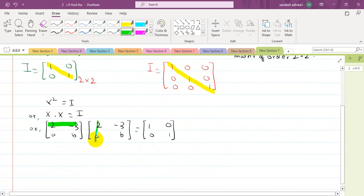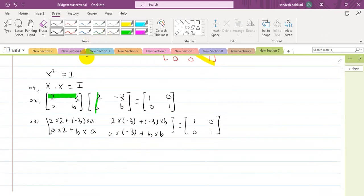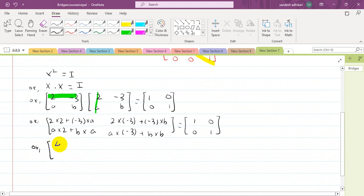So we get: 2 times 2 plus minus 3 times a, then 2 times minus 3 plus minus 3 times b, then a times 2 plus b times a, and a times minus 3 plus b times b. This equals [1, 0; 0, 1].